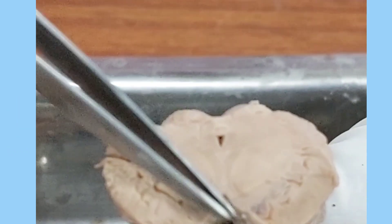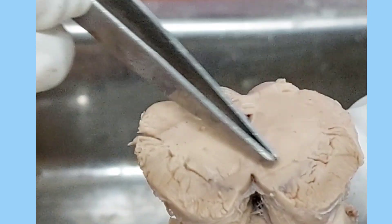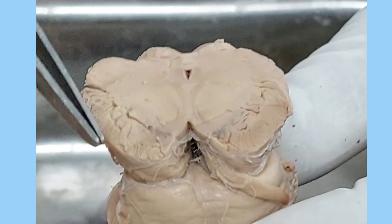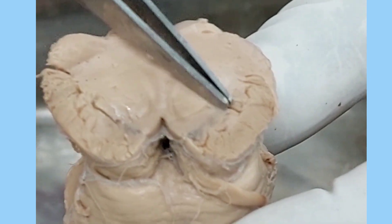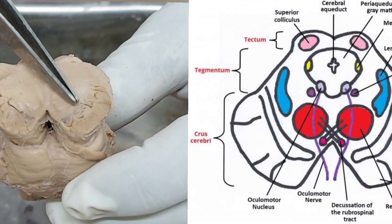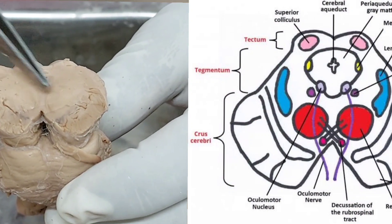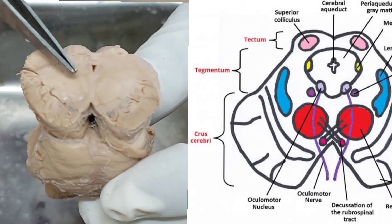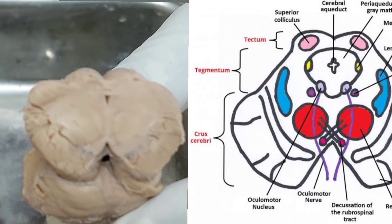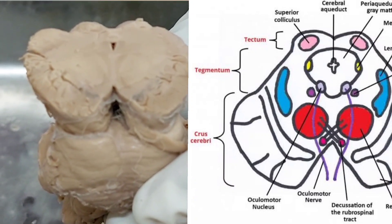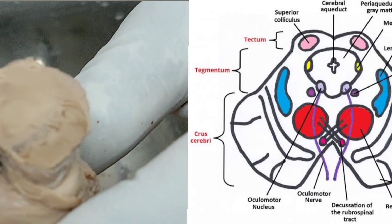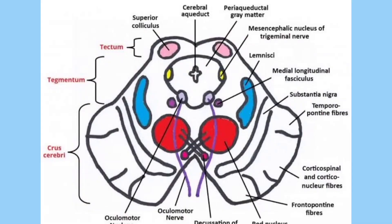The two substantia nigra are not continuous in the midline, and the crus cerebri is also not continuous. Coming dorsally or posteriorly, behind the substantia nigra on both sides, you can see one rounded structure on either side of the midline — this is called the red nucleus. Two large red nuclei are present. The red nucleus is about 5 millimeters in transverse diameter.